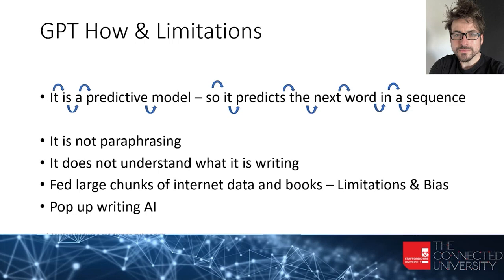This is really important for people to understand, because it doesn't love you, it doesn't hate you, it doesn't want to kill you or destroy anything — it's just predicting the next word in a sequence. So it's not a paraphrasing tool. We have seen them develop into more paraphrasing, but it's not taking information and paraphrasing around it — it's just predicting the likelihood of the next word. And it doesn't really understand what it's writing. So when it tells you it loves you and wants you to marry it, it's not true.